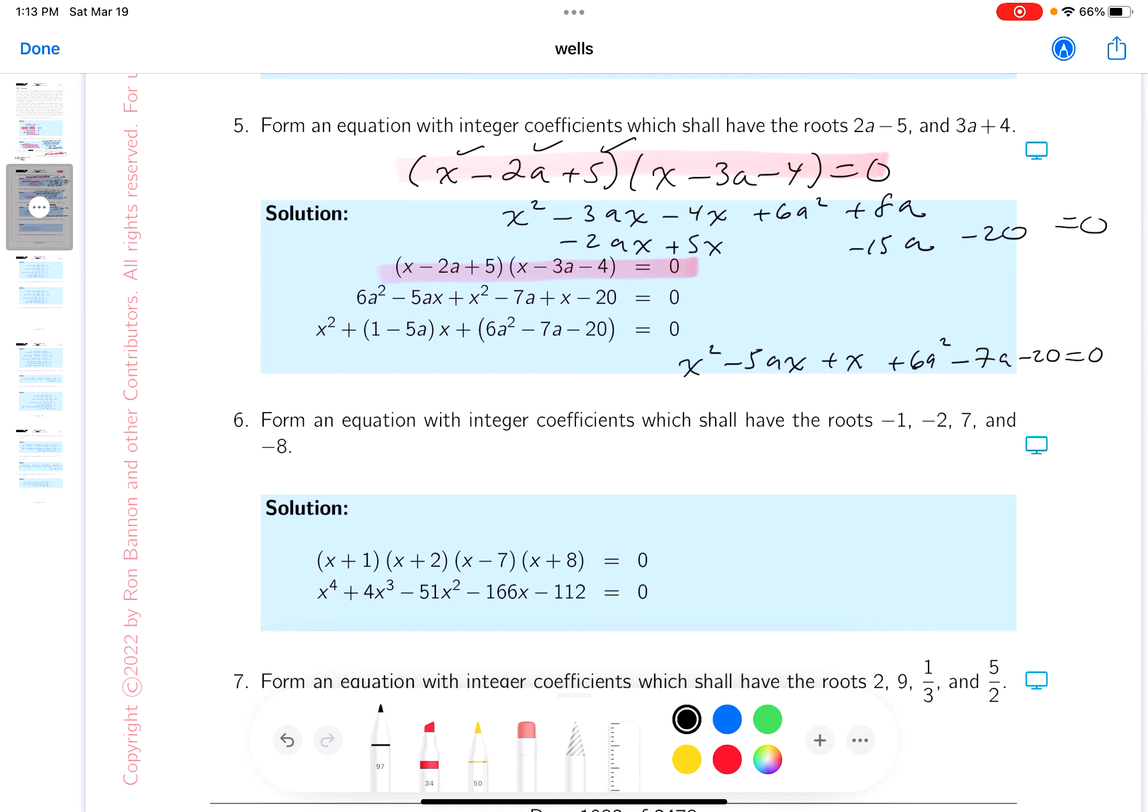Plus 6a squared minus 7a minus 20 equals 0. And I want to write this so it looks quadratic in form. So x squared.